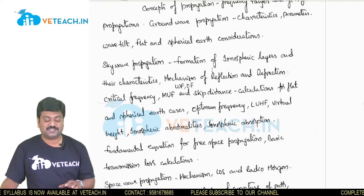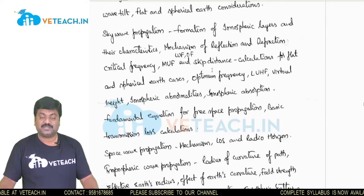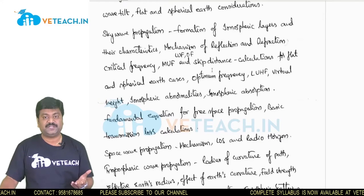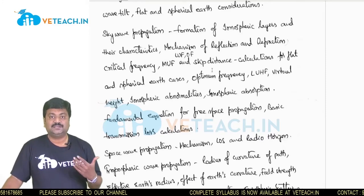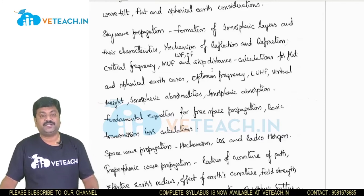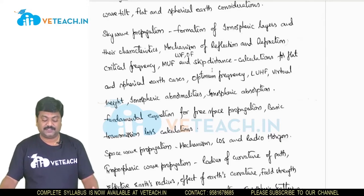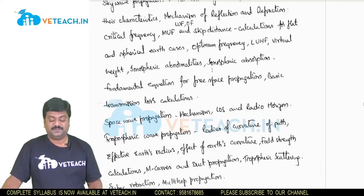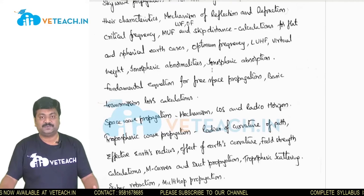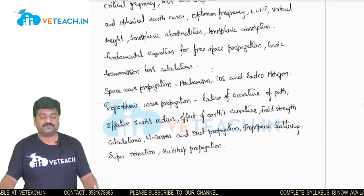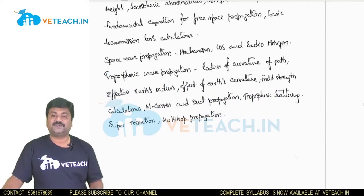In ground wave propagation, we will be studying the characteristics and parameters like wave tilt, flat and earth considerations. In sky wave propagation, we will be studying the formation of ionospheric layers and their characteristics, mechanism of reflection and refraction, critical frequency, maximum usable frequency, lowest usable frequency, optimum frequency, and skip distance. We will also be calculating flat earth and spherical earth cases.